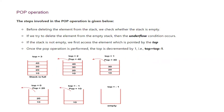Now let us see how to delete data from the stack. Before deleting, we check whether the stack is empty; if we try to delete from an empty stack, the underflow condition occurs. If the stack is not empty, we access the element pointed to by the top. Once the pop operation is performed, top is decremented by 1 — top equals top minus 1. With top equal to 3 and the stack full, we pop element 40 and top becomes 2.